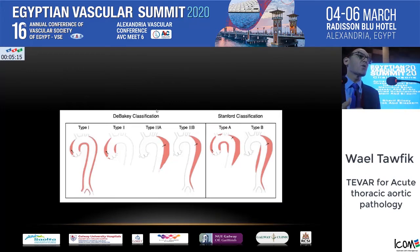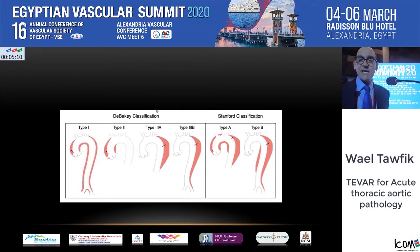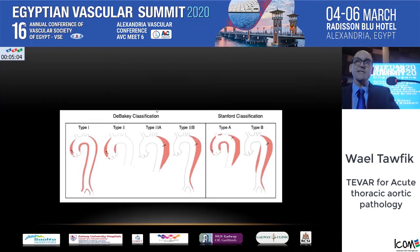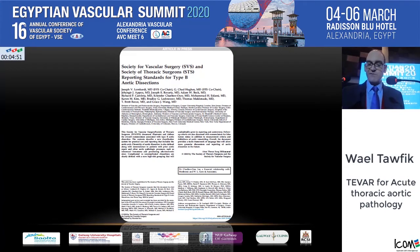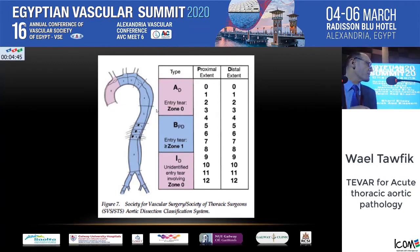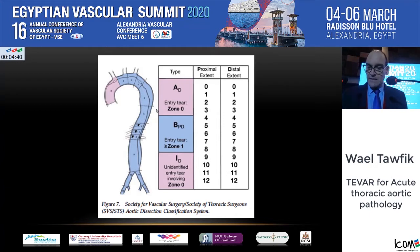Moving to dissections, we know the basic classification between the DeBakey and Stanford systems — type A's and type B's. We need to look more closely at type B's with retrograde extension and how to manage those. Just last month, the SVS and the Society for Thoracic Surgeons published their reporting standards for type B aortic dissections, recommending a new classification.